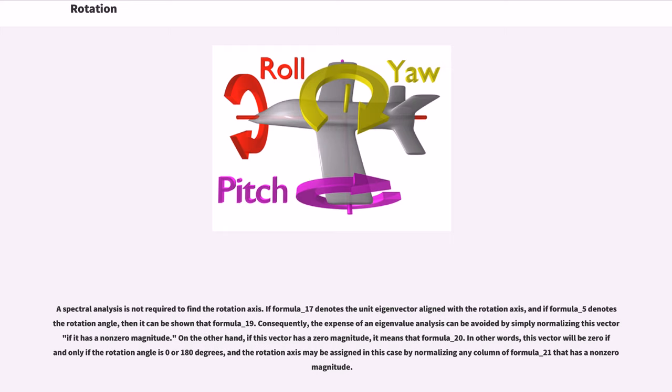A spectral analysis is not required to find the rotation axis. If a unit eigenvector is aligned with the rotation axis, and if the rotation angle is known, then it can be shown by formula. Consequently, the expense of an eigenvalue analysis can be avoided by simply normalizing this vector if it has a non-zero magnitude.